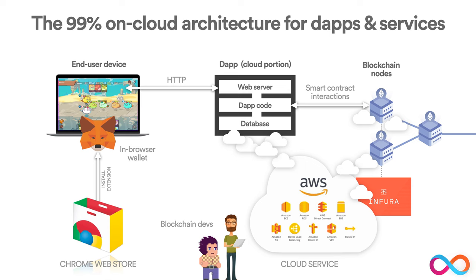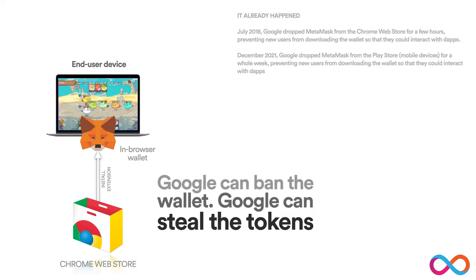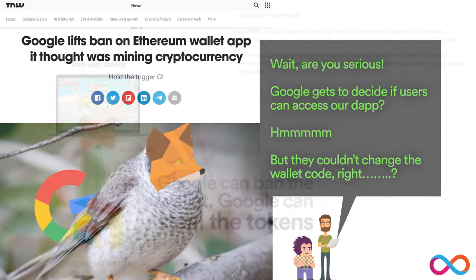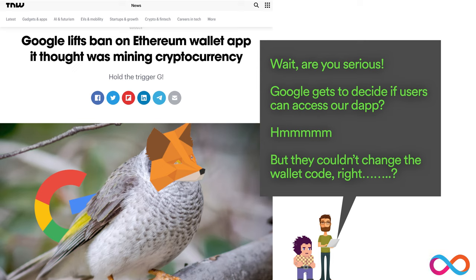Let's look at some things that can go wrong with this very common architecture. If you're using the Google Chrome Store to host the wallet and deploy it into your browser, there's the danger that Google can ban the wallet — stopping users from accessing your service. There's also the danger that someone could act maliciously and modify the wallet code. This has already happened: Google actually banned MetaMask, which the Ethereum ecosystem depends on, for a whole week. And that's not nearly as serious a consequence as could happen if they actually modified the code to steal people's tokens.